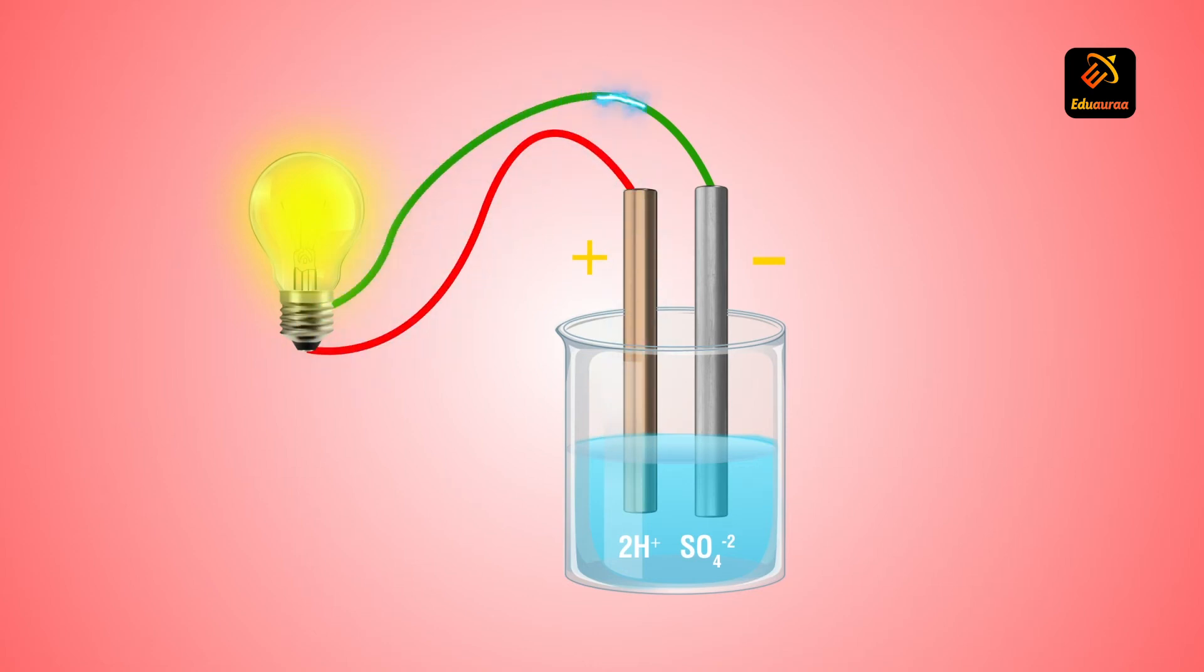Electric cell is now ready to supply current. The chemical reaction occurs within the cell that converts the chemical energy into electrical energy. This causes flow of current.